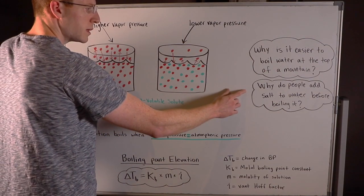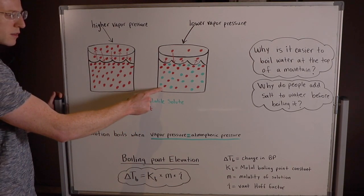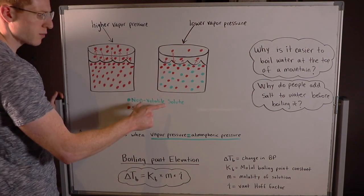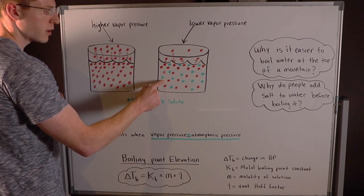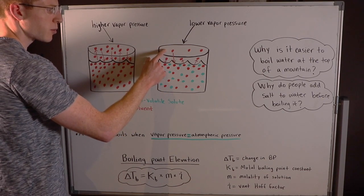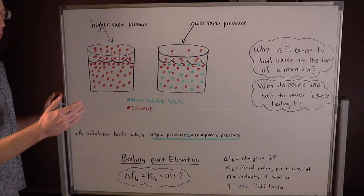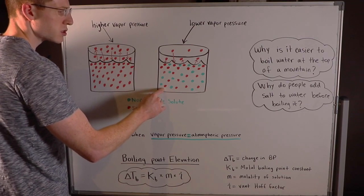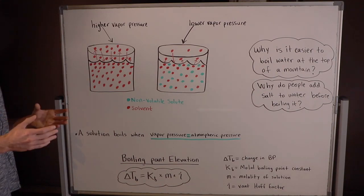Also, why do people add salt to water before boiling it? Well think about this example here. The salt is like the green dots. If we add a non-volatile solute such as table salt to water before we boil it, it lowers the vapor pressure. Thus we have to get this solution at a very high temperature, higher than normal, to boil. So it actually means that your water is going to boil at a higher temperature, thus you can cook your food faster.